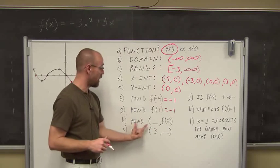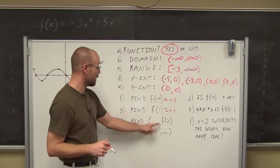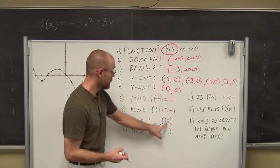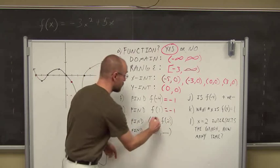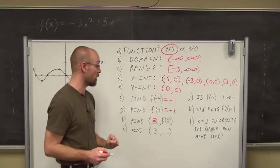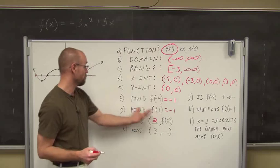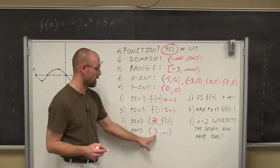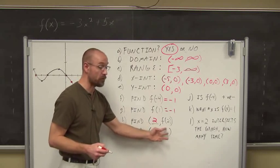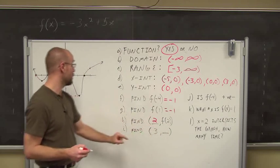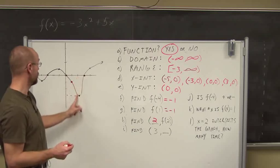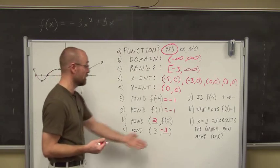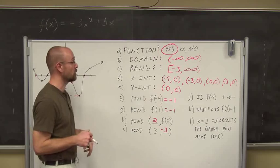Using function notation, we're asked to find a missing coordinate where the x-value is what's in the parentheses. When x is 3, we can go to that point on the graph. The value there is negative 3. So f of positive 3 results in negative 3. That's how function notation works.